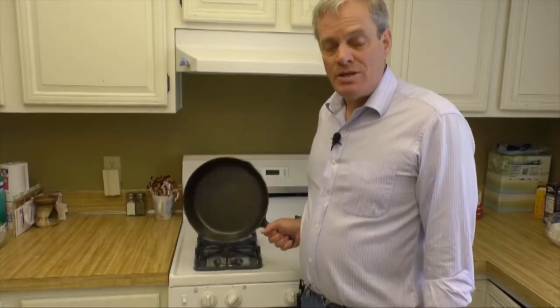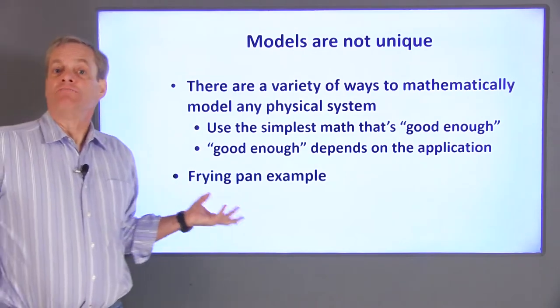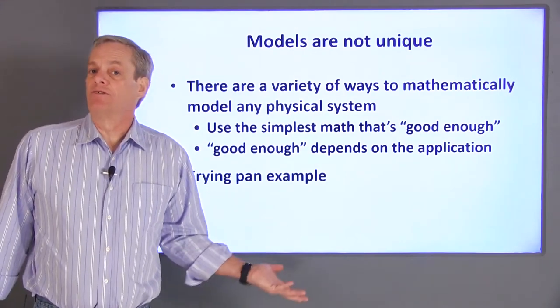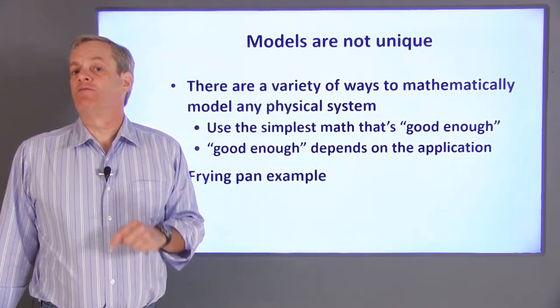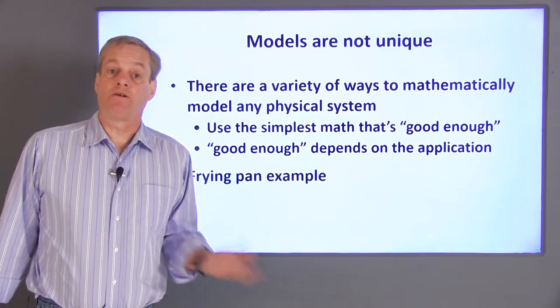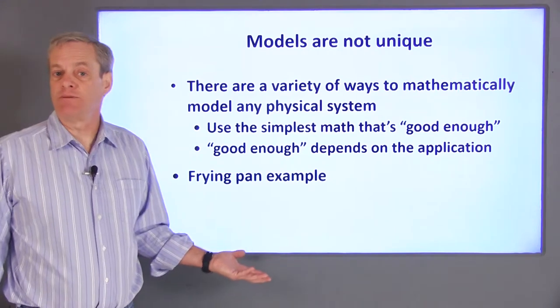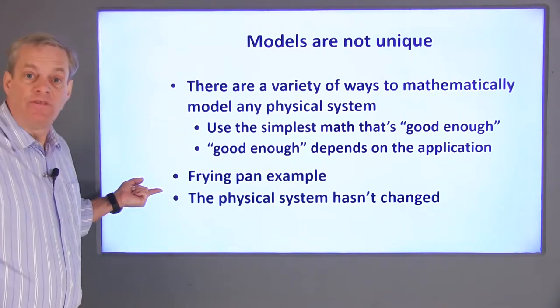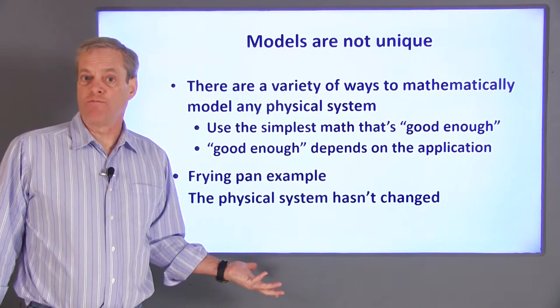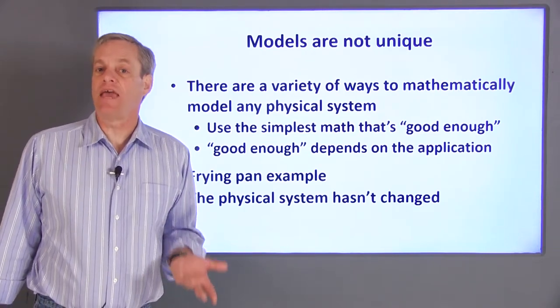But, regardless of the complexity of the model, remember the physical system is always the same. So, it's important to realize that the mathematical model of the system is different from the physical system itself. In our frying pan example, we had a couple of ways we could represent the frying pan temperature. However, the actual system, the frying pan and the stove burner, is the same for both cases.